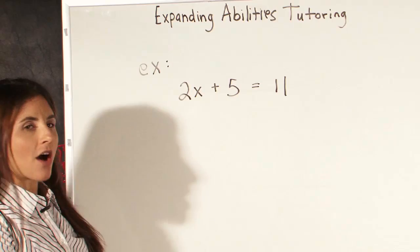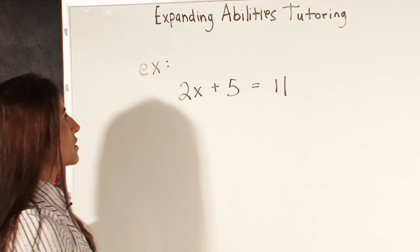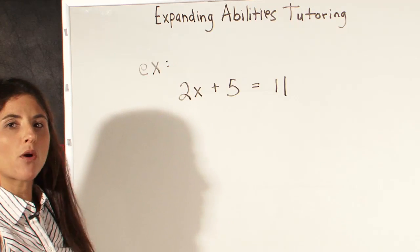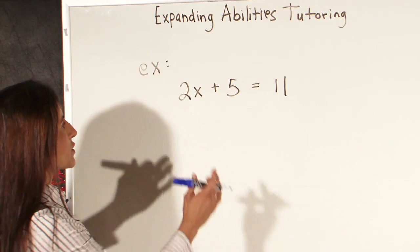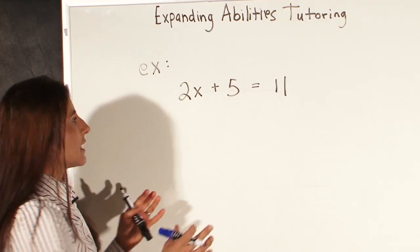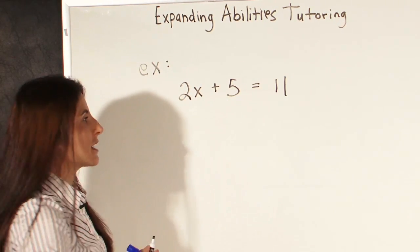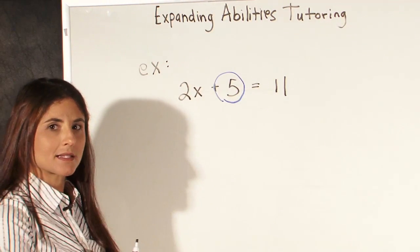So we're going to start off with this simple equation here, 2x plus 5 equals 11. The important thing to remember when solving a problem like this is that first we need to move the constant term here, the term that is not attached to the x. So see the 5? Plus 5 is all by itself.